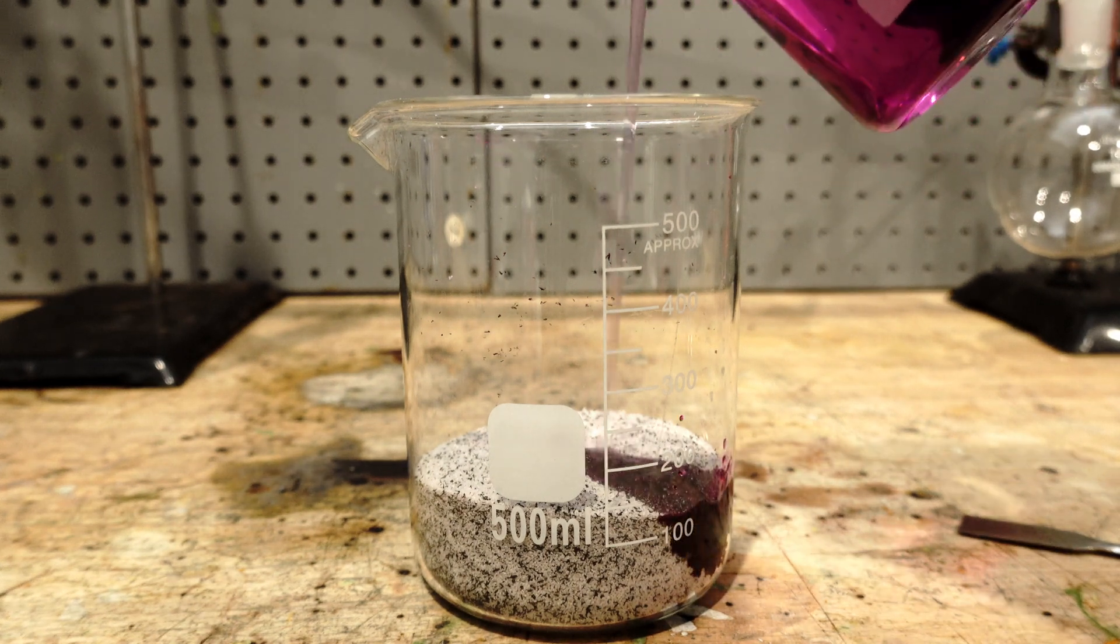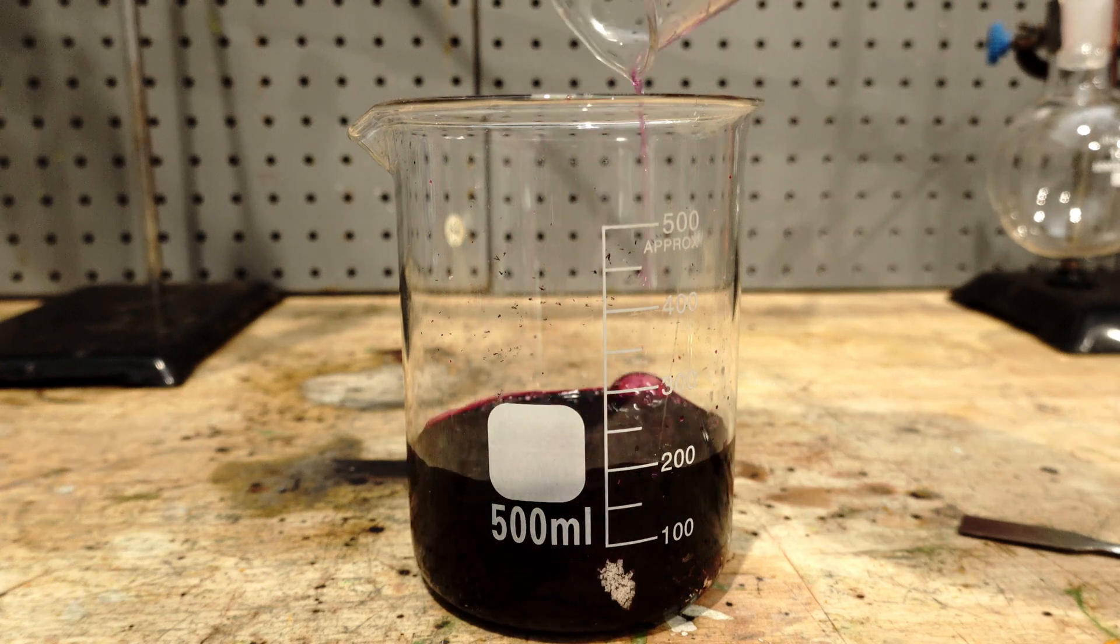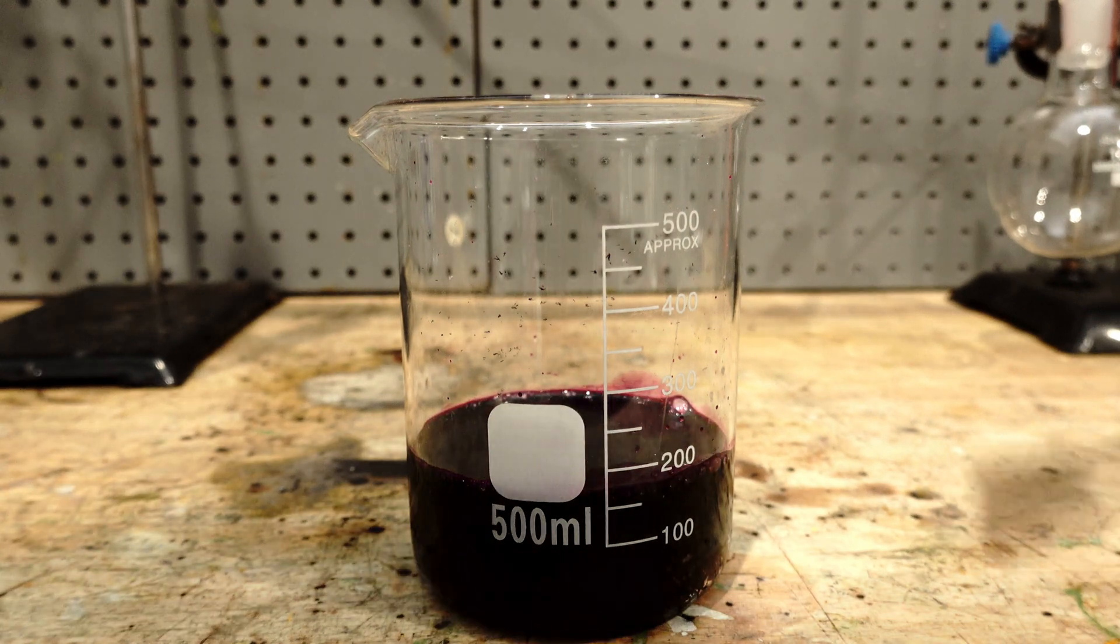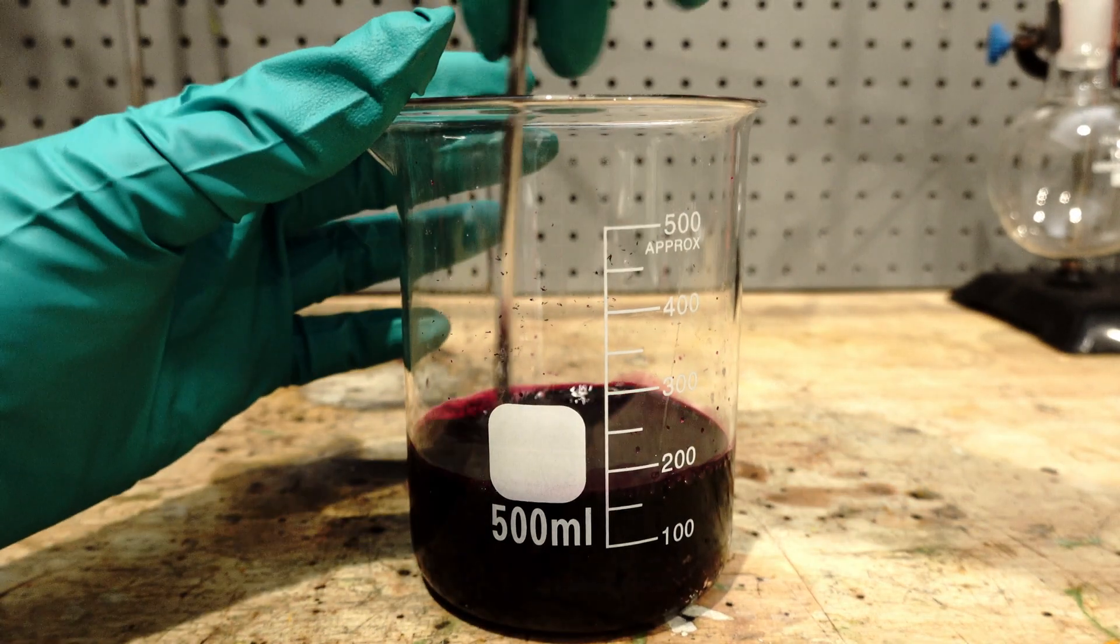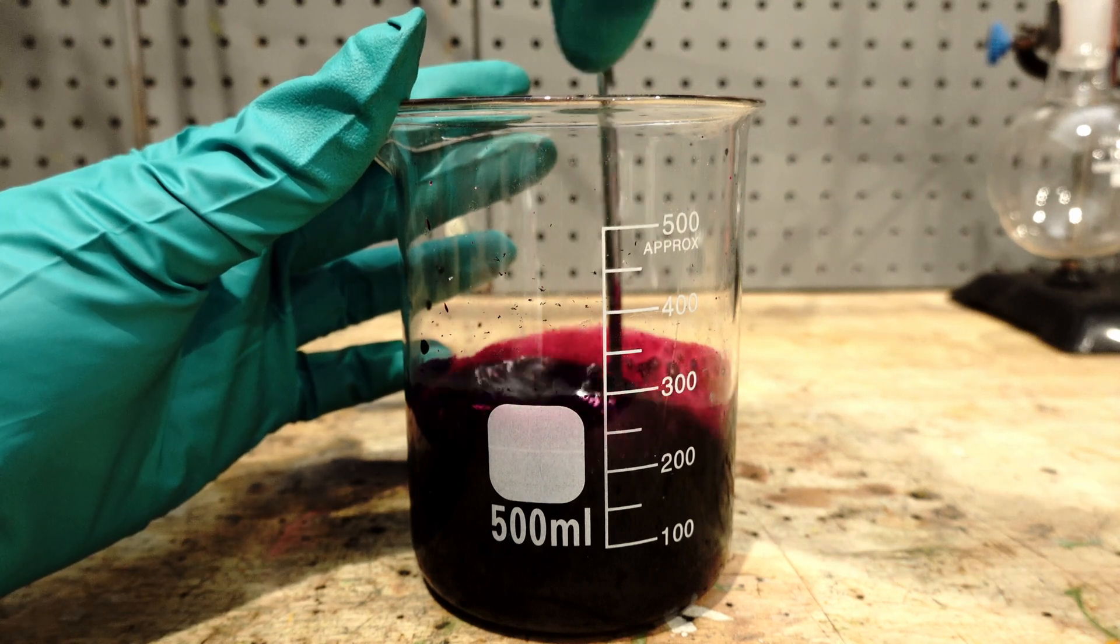If you didn't know, manganese heptoxide is an extremely sensitive explosive and its formation would probably not be in our best interest. The reason why the water was purple was due to the potassium permanganate impurities.